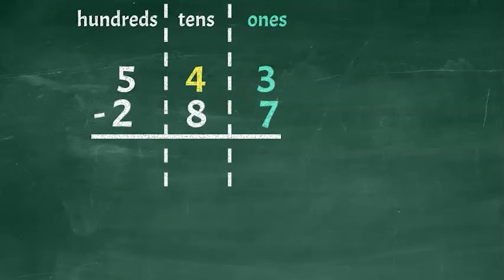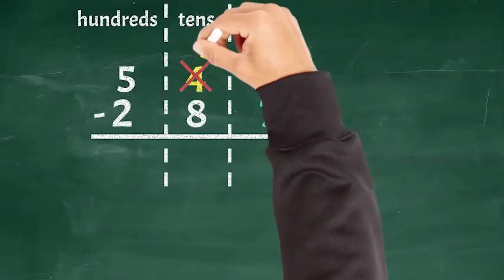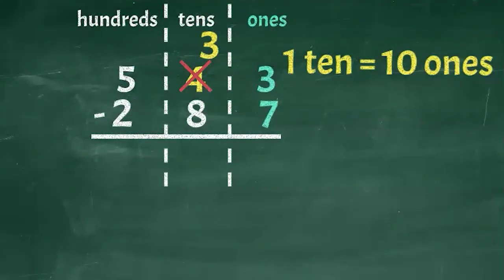We're going to borrow one of those tens and move it over to the ones place, so let's just cross out that four and change it to a three. Now there are three tens left in the tens place, and we will exchange that ten we borrowed for ten ones and move it to the ones place.